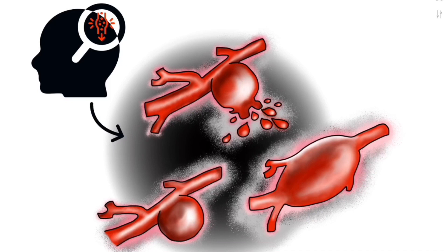When the vessel wall is weakened, the pressure of the blood flowing through the arteries pushes its vessel wall outwards, causing the dilation. This is most common in arteries rather than veins due to the increased pressure of blood flow in the arterial versus the venous system.